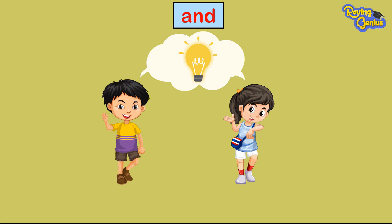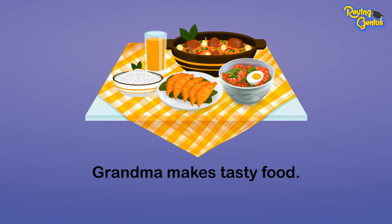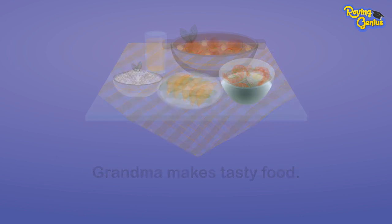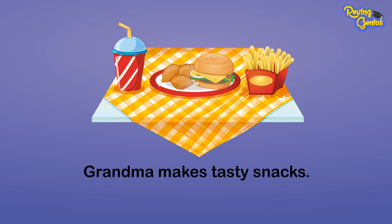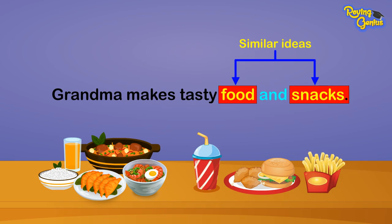AND joins two ideas that go together equally. For example, Grandma makes tasty food. Grandma makes tasty food and snacks.